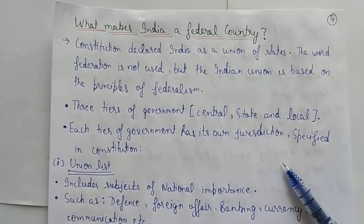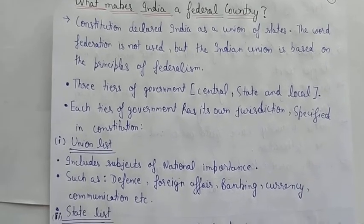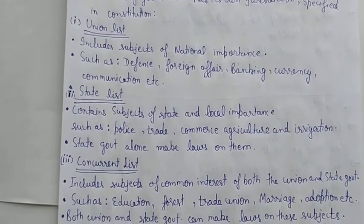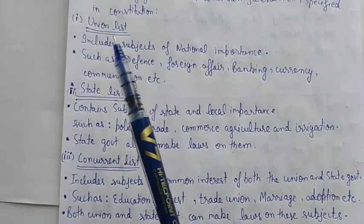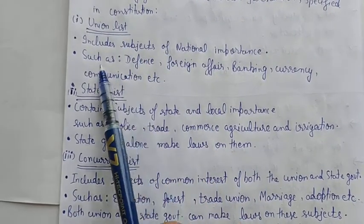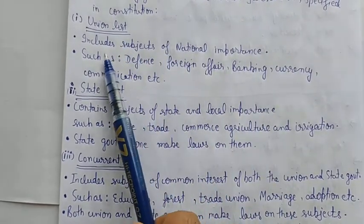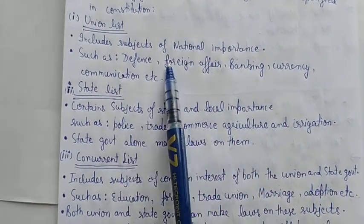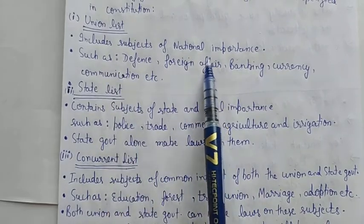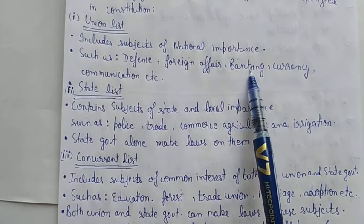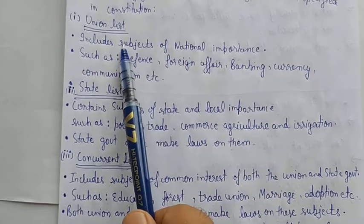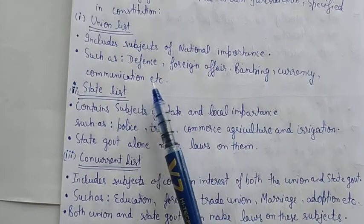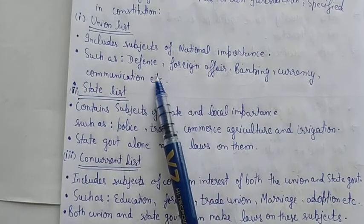Harik ke paas apna jurisdiction tha. Powers distribute karne ke liye mainly teen lists banayi gayi. Pehli list banayi: Union List — ismein national importance ke subjects include kiye gaye jis mein pure rashtra ka hit hota tha, toh usko central government control karti thi.